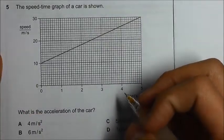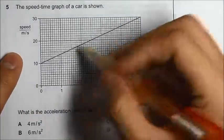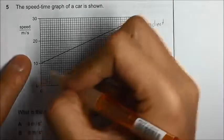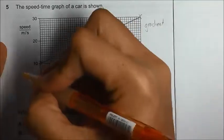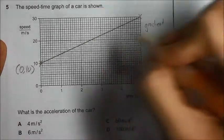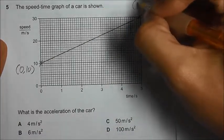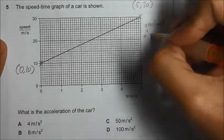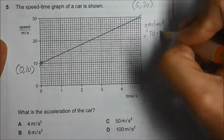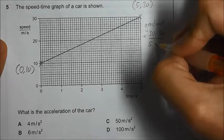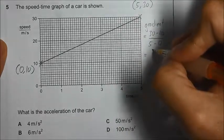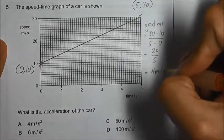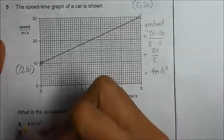To find the acceleration of the car, we can find the gradient of the speed-time graph. To find the gradient, we need to identify two coordinates. I will take the first point and the last point. First point coordinate will be 0, 10. The second point will be 5, 30. So use the formula: y2 minus y1 divided by x2 minus x1. It will be 30 minus 10 divided by 5 minus 0. So you will get 20 divided by 5. The answer will be 4 meter per second square. Answer A.